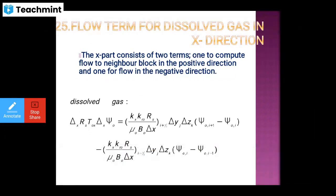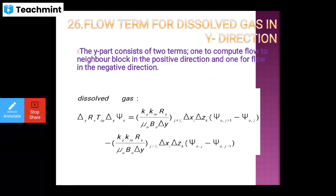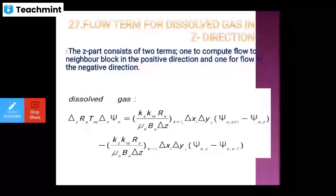The dissolved gas flow term in the y direction: the y part consists of two terms — one to compute the flow to the neighbor block in the positive direction and one for flow in the negative direction. Dissolved gas: delta-T · delta_y · R_s · T_y · delta_y · gamma_i — so you are getting this equation. Then flow term for dissolved gas in the z direction: the z part consists of two terms — one to compute the flow to the neighbor block and one for flow in the negative direction.